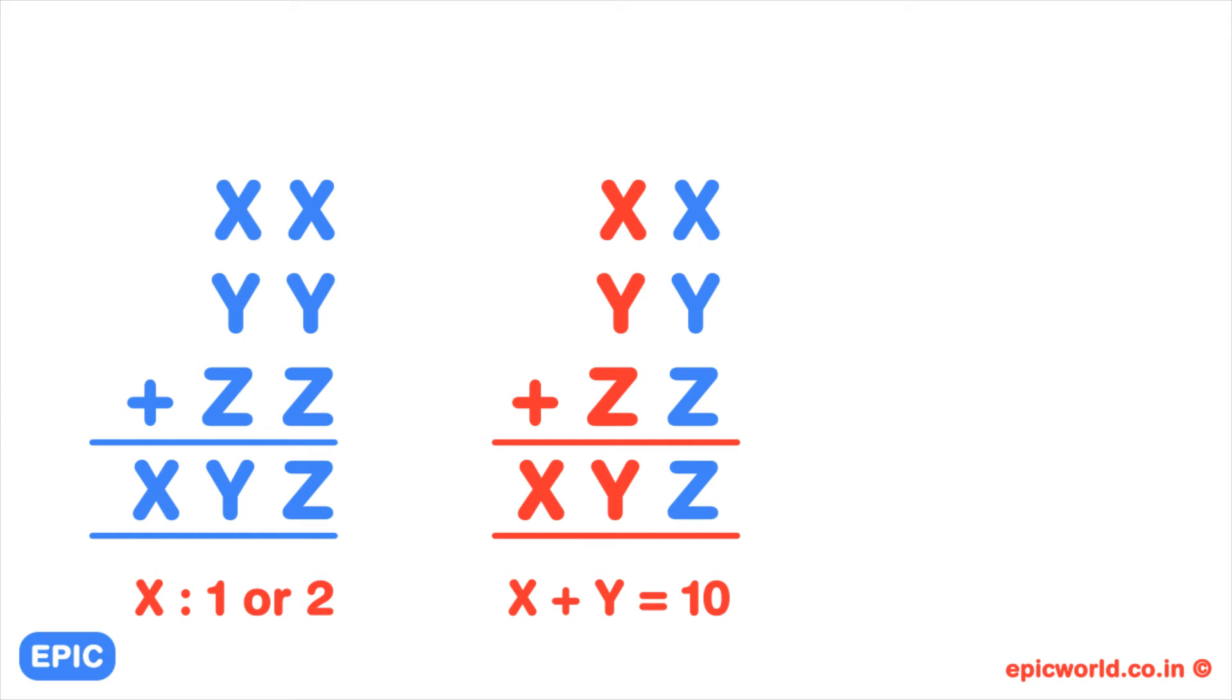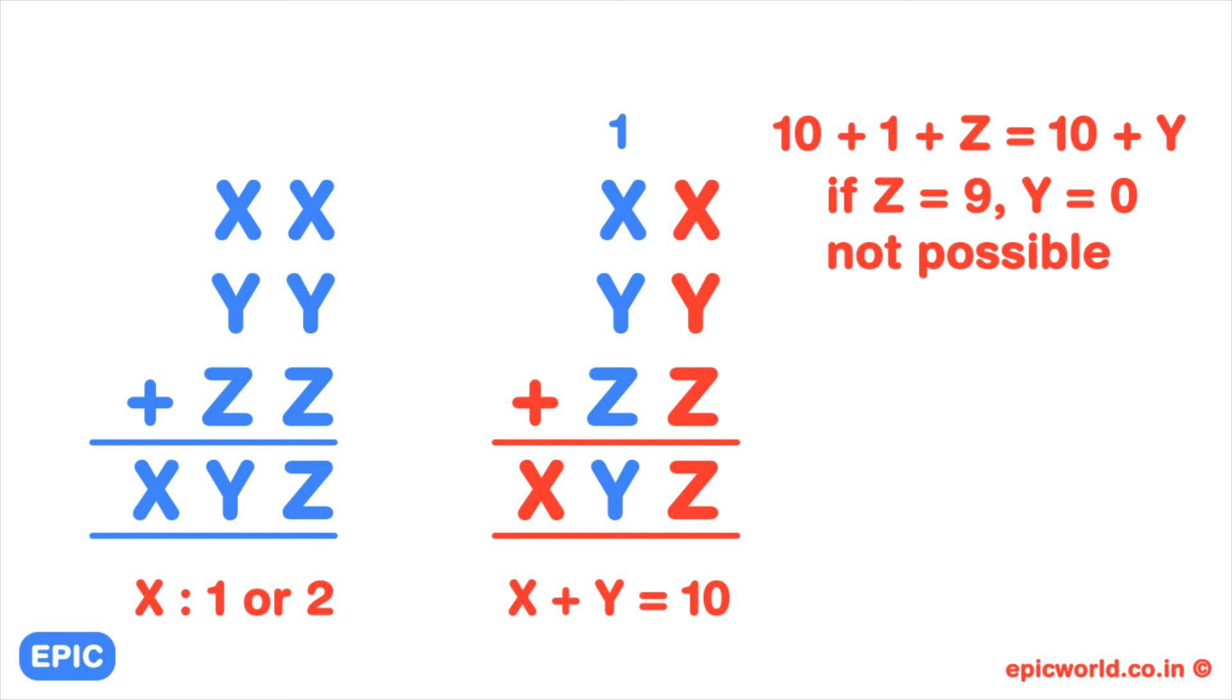Now focus at the addition at the 10th place, which is X plus Y plus Z equals Y. You know that there is a carryover and X plus Y is 10. So the equation will be 10 plus 1 plus Z equals Y. With 11 plus Z equal to Y, the maximum value of Z can be 9 but that will make Y as 0. So 9 for Z is ruled out. Anything lower than 9 means that the sum is less than 20, hence X has to be 1.